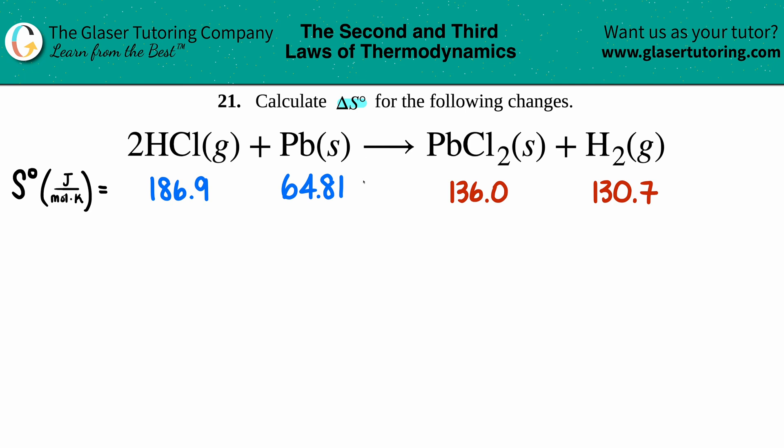Delta S—that triangle means delta—represents a change. We're seeing what the change in entropy is. Keep in mind that entropy is the randomness of molecules.